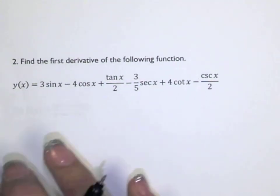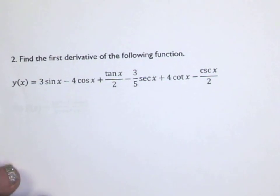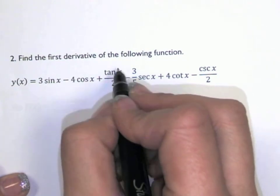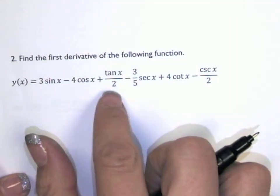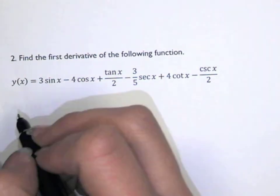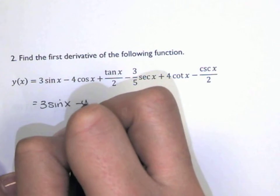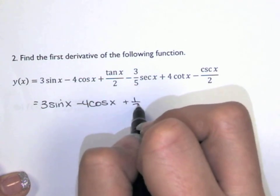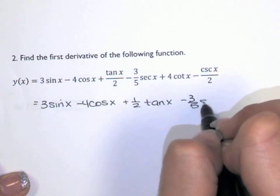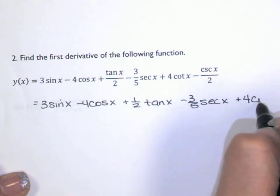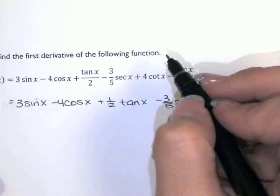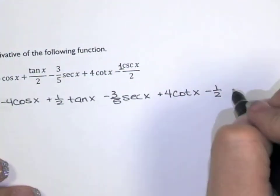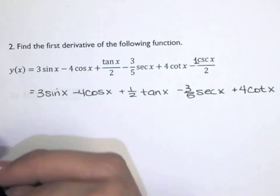This next one is just a sum of multiples of trig functions. Before taking any derivatives, I factor out all the constants — we could use the quotient rule, but it's really not necessary since those are just constants in the denominator. So I rewrite: it's 3 times sine of x, minus 4 cosine of x. There's an implied 1 in front of that tangent, so this is 1 half of tangent of x, minus 3 fifths of secant of x, plus 4 times cotangent of x, and a negative 1 half times cosecant of x.